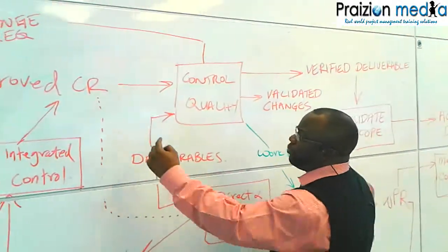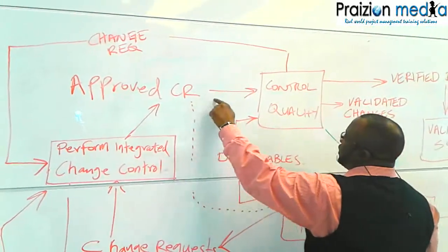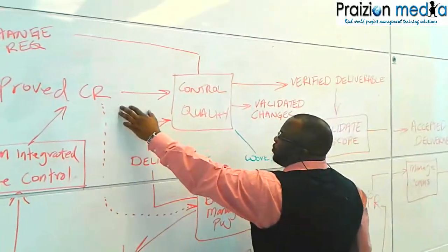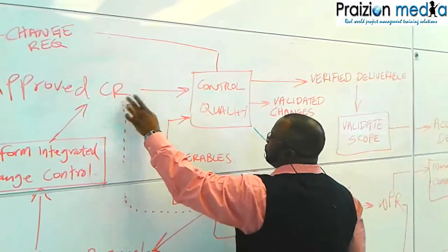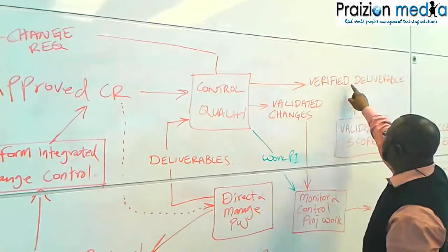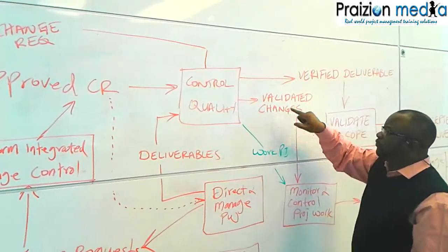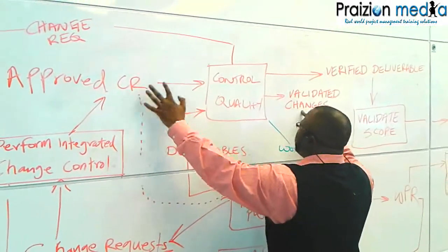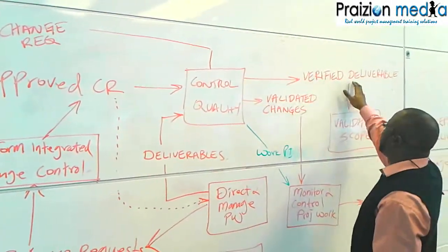Approved change requests are also an input to Control Quality. If you are checking the product against the approved change request and everything is according to plan, you will have validated changes. Validated changes are proof that the change request is now inherent in the deliverable.